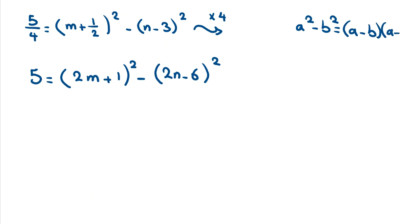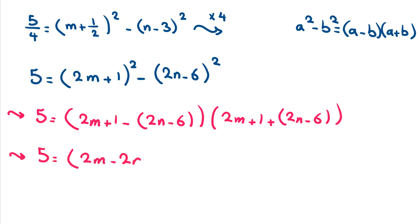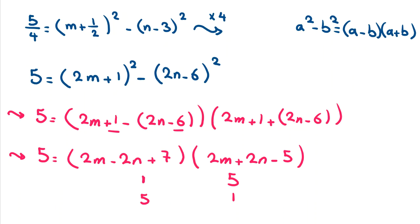We use the famous identity a squared minus b squared equals (a - b)(a + b). Applying this, 5 equals (2M + 1 - (2N - 6)) times (2M + 1 + (2N - 6)), which simplifies to (2M - 2N + 7) times (2M + 2N - 5) equals 5.